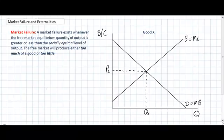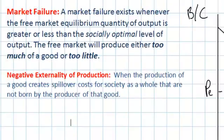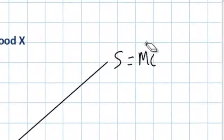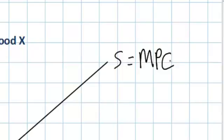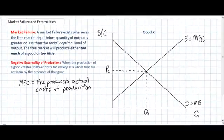Let's begin with a particular type of market failure known as negative externalities of production. A negative externality of production exists whenever the production of a particular good creates spillover costs for society as a whole that are not borne by the producer of that good. Looking back at our diagram, the supply curve represents the costs of production for the producers of Good X — more specifically, the marginal private cost (MPC). MPC equals the cost of production as seen by the actual producer of the good, including labor costs, raw materials, energy, and other inputs.